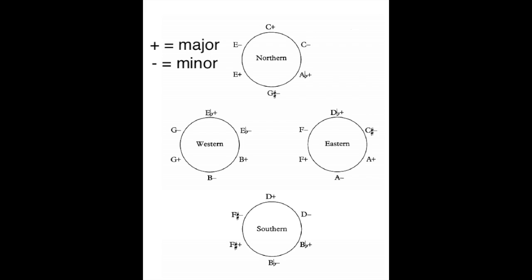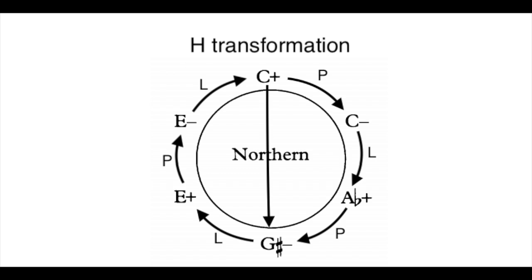With our knowledge on neo-Riemannian transformations, we can understand this cycle as a process of PLPL, or LPL transformations. Chords on opposite sides of the hexatonic systems are called hexatonic poles. The H transformation is therefore relating C major to Ab minor to each other through hexatonic polarity.